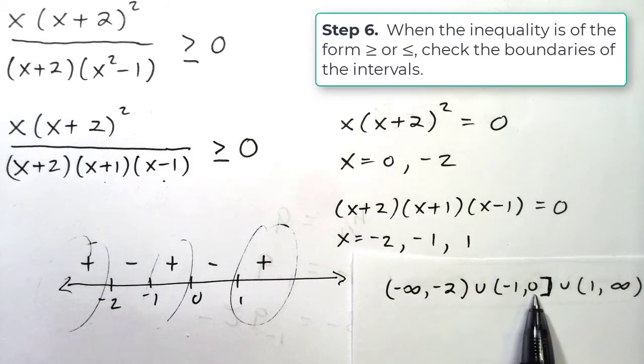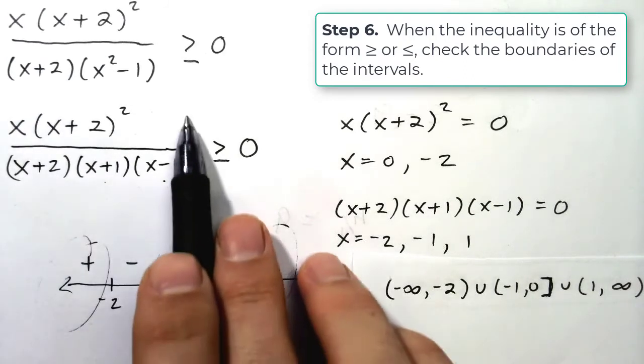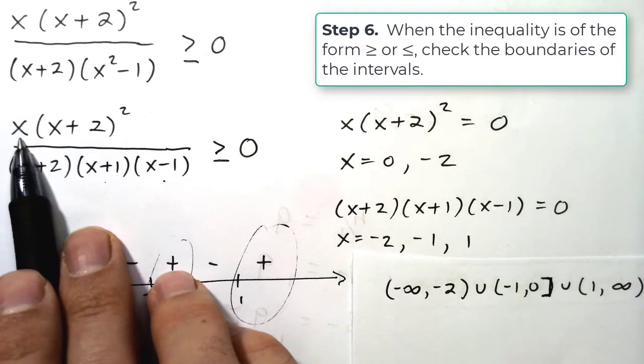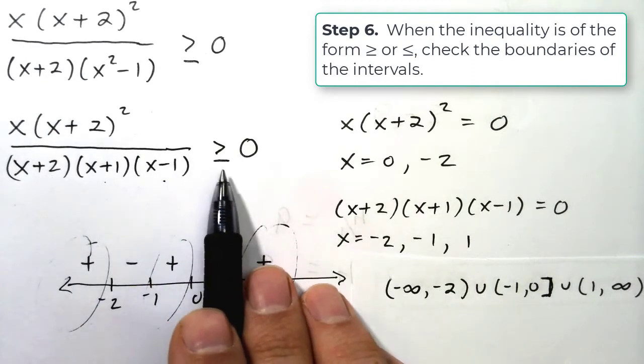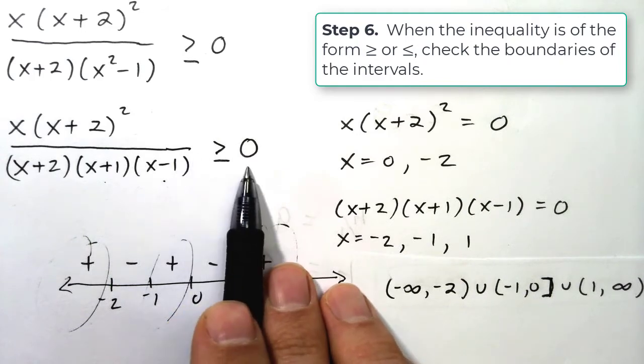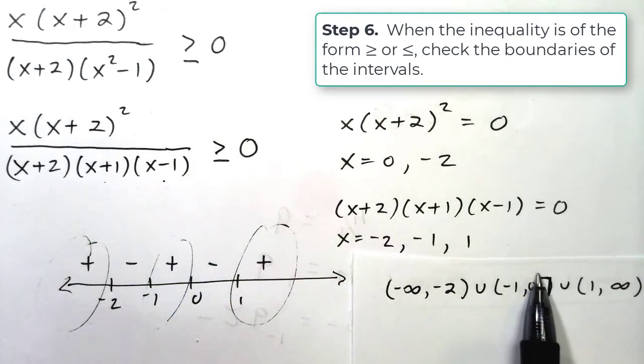What about zero? Well if I plug in zero, the whole thing becomes equal to zero because the numerator is zero. It's not undefined. It's perfectly defined. It's equal to zero. And that is a true statement. Zero is greater than or equal to zero. So I include the zero.